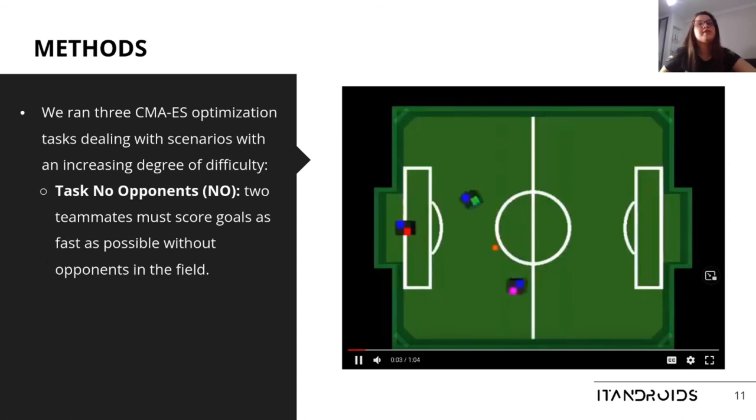In this work, we ran three CMA-ES optimization tasks, dealing with scenarios with an increasing degree of difficulty. The first task was the no opponents, shown in the recording, in which two teammates must score goals as fast as possible without opponents in the field.